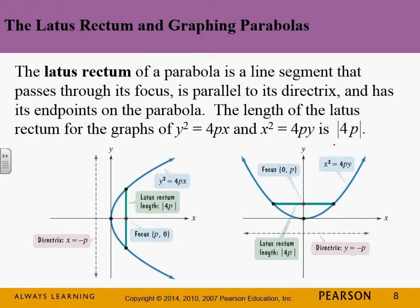The latus rectum is the line segment that passes through the focus with length 4p. Now, p can sometimes be negative, which means the parabola opens in the opposite direction. If p is negative for x² = 4py, the parabola opens downward instead of upward, so the directrix would be above and the focus would be below. We use the absolute value of 4p for the latus rectum length to account for negative p.